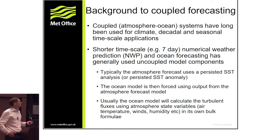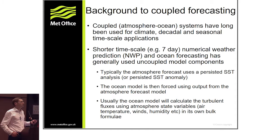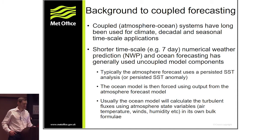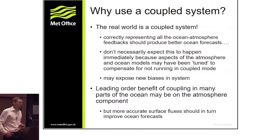Typically, the atmosphere model runs using a persisted sea surface temperature analysis or a persisted SST anomaly, and the output is used to force the ocean model. Usually, the ocean model calculates turbulent fluxes using the atmospheric state variables but with its own bulk formulae, which may or may not match those used in the atmospheric model — and that can have consequences for results.